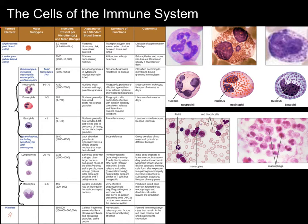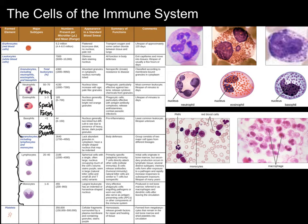Then we have basophils, which are quite rare but extremely important — less than 1% of circulating white blood cells. These are your body's scouts and guards. They don't actually directly attack things for the most part. What they do is their granules — which are quite dark and quite dense — are filled with histamine and heparin.